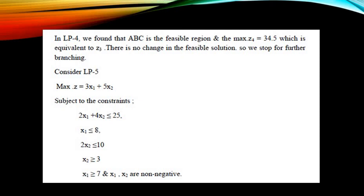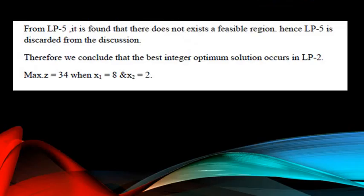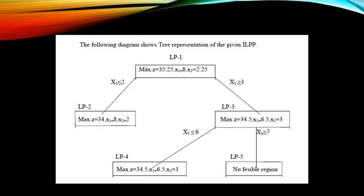For LP5 we consider: maximize Z equal to 3x1 plus 5x2, subject to 2x1 plus 4x2 ≤ 25, x1 ≤ 8, x2 ≤ 10, x2 ≥ 3, and the new constraint x1 ≥ 7. Solving graphically, there is no feasible region for LP5. Therefore we stop further branching. The best integer solution occurs in LP2: maximize Z = 34 when x1 = 8 and x2 = 2.